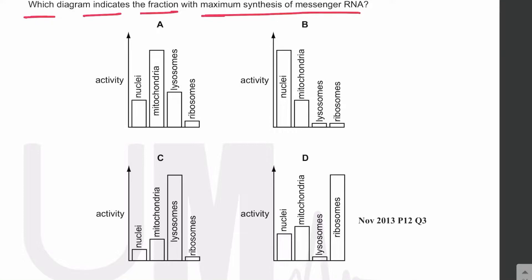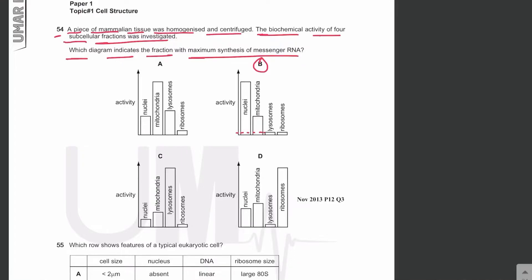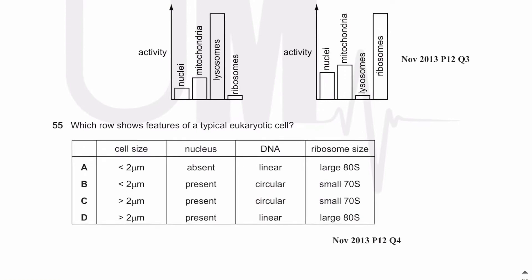The answer is B: maximum synthesis of messenger RNA in the nuclei, with the second being mitochondria. Lysosomes and ribosomes do not synthesize messenger RNA — their activity is negligible or zero — because they do not contain DNA, and transcription does not occur in them. Moving on to MCQ number 55: which row shows features of a typical eukaryotic cell?